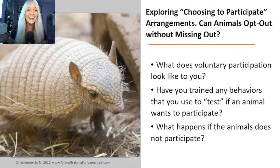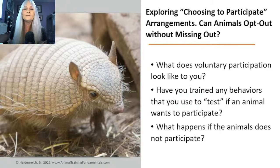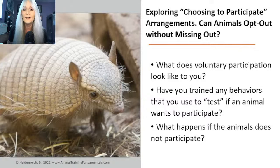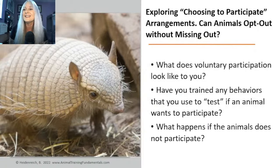What are some configurations people have tried that give an animal a way to say 'yeah, I'm into this' or 'no, I'm not'? Have you trained any behaviors to test that? And what happens if the animal says 'I'm not doing that'? What's the consequence for not doing that behavior? It could be a group of behaviors that gives you information.